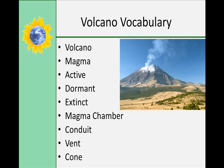A volcano is defined as a place on the earth's surface where hot molten rock or magma breaks through. As we'll see, there are many different types of volcanoes and material that has erupted. In general, a volcano is classified as active if it erupts lava, rock, gas, or ash, or if it shows seismic or earthquake activity.